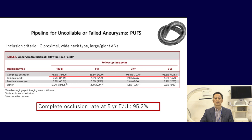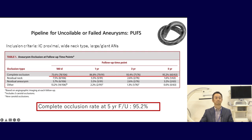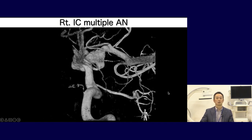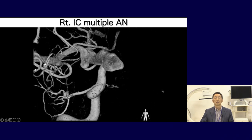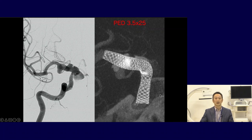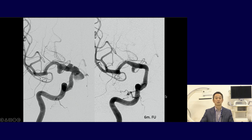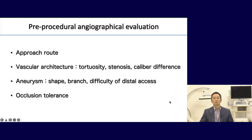Next is the flow diverter. The flow diverter is a braided stent with higher metal coverage rate, providing curative endovascular treatment for wide-neck sidewall aneurysms. It has significantly improved treatment outcomes for large and giant aneurysms. This case showed multiple aneurysms where Pipeline deployment was performed, and six-month follow-up angiogram demonstrated complete reconstruction of the internal carotid artery with occlusion of aneurysms. As for pre-procedural angiographic evaluation, we check the approach route, vascular architecture of the parent artery, and aneurysm morphology.